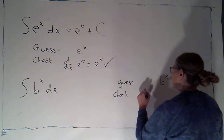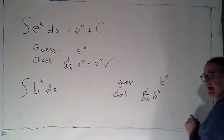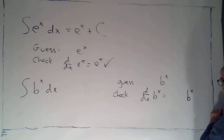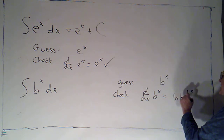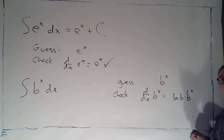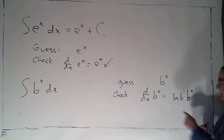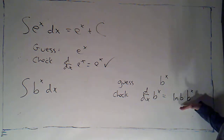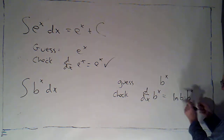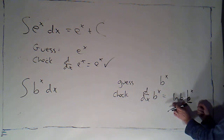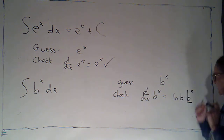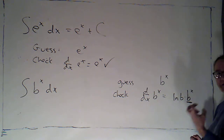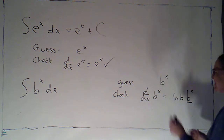If I take the derivative of b to the x, I get the exponential function back, but if the base is not e, I also get this extra factor of the natural log of the base. If the base is e, the natural log of e happens to be 1, so it doesn't make any difference. So here I wanted b to the x, but I've got this extra factor — though the natural log of b is just a constant, since b is a fixed number.